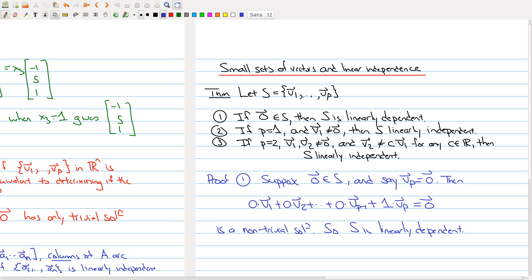I could have had 10,000 vectors inside of there. I look in my set of vectors, I see the zero vector, then I know automatically that my set of vectors is linearly dependent. Let's go to the other extreme. Let's say that my set S here has only one vector.